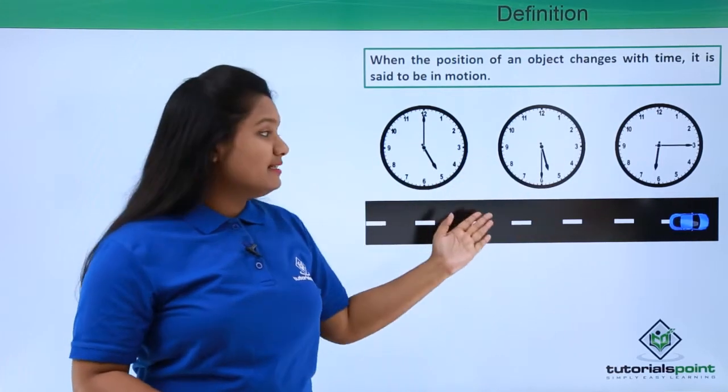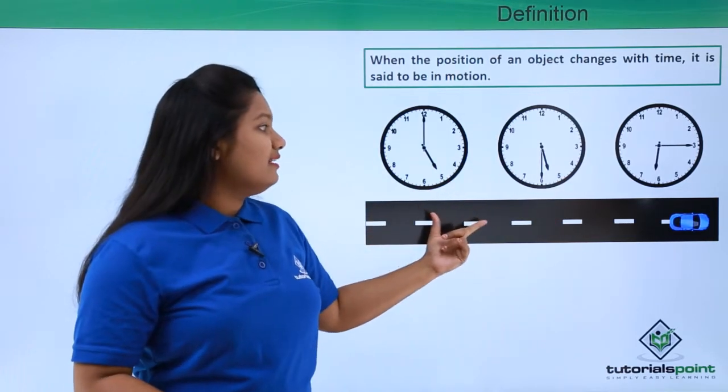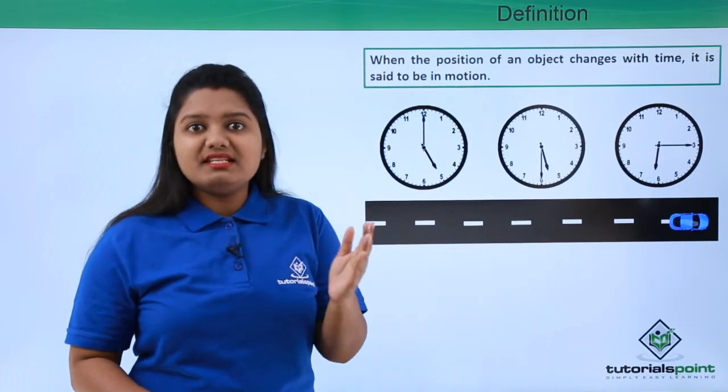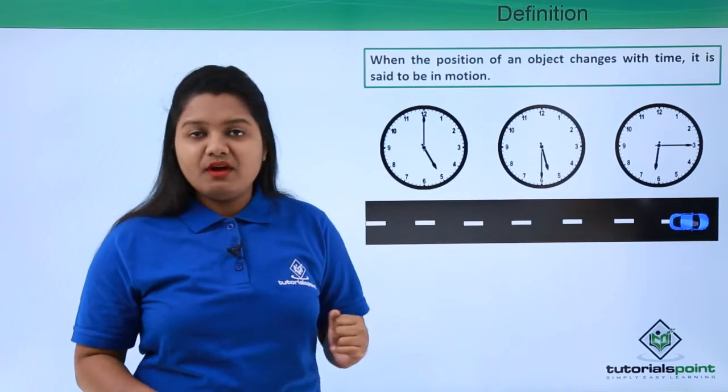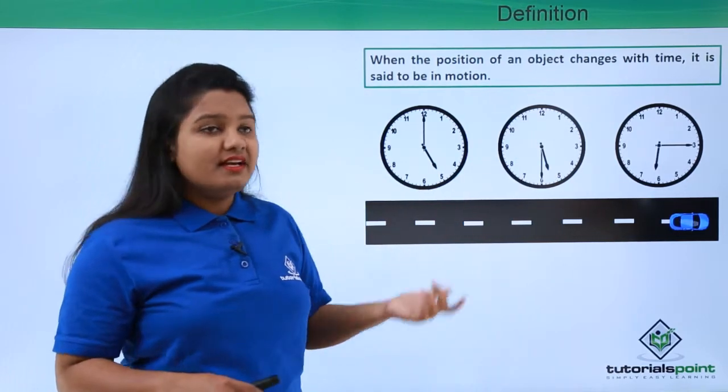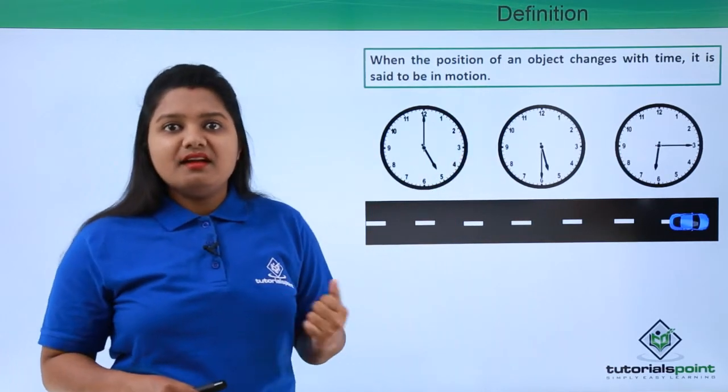There was an increase in time, so here we can say that this car is moving because it is changing its position whenever there is a change in time, or we can say that we are finding this car in a different position every time there is an increase in time.